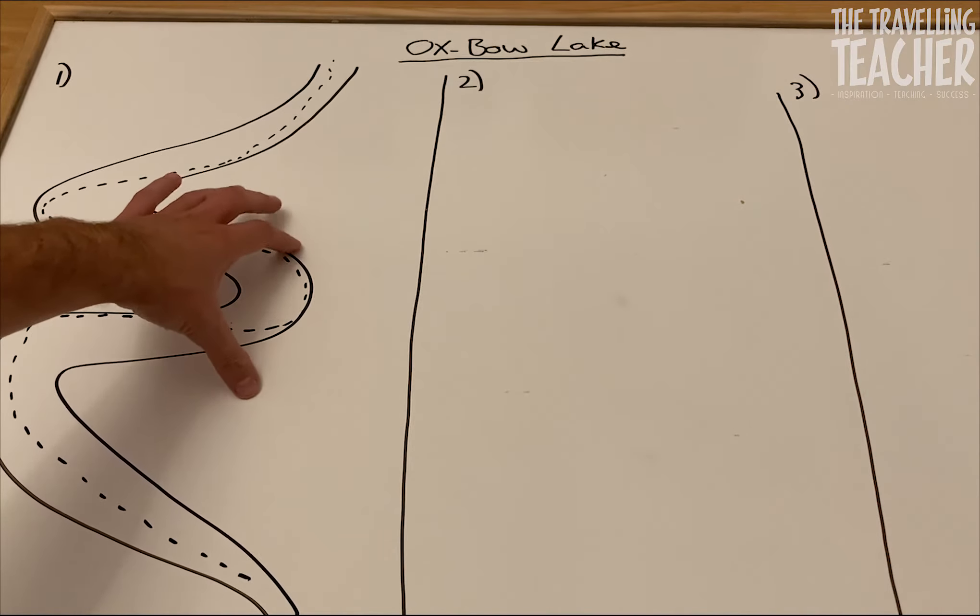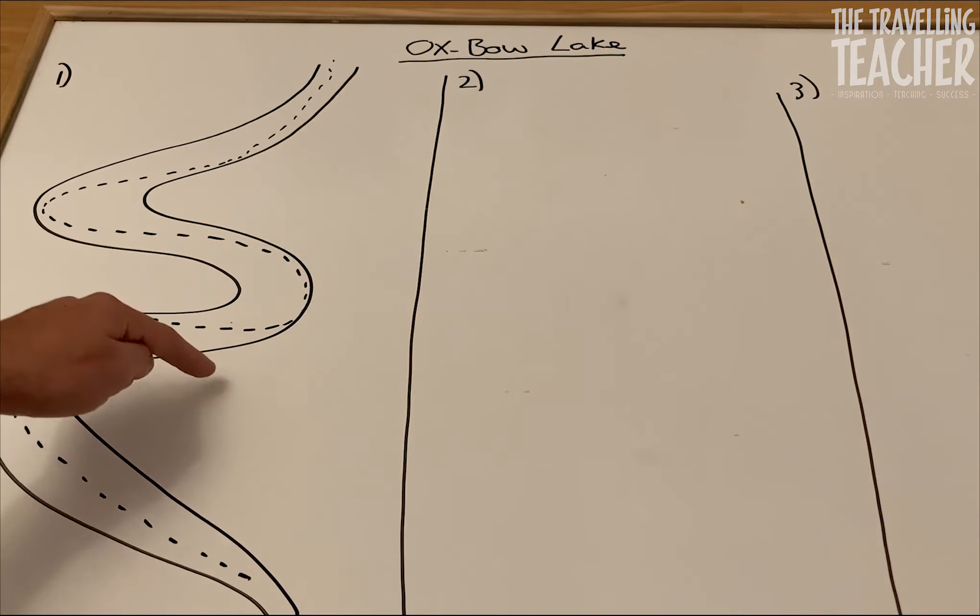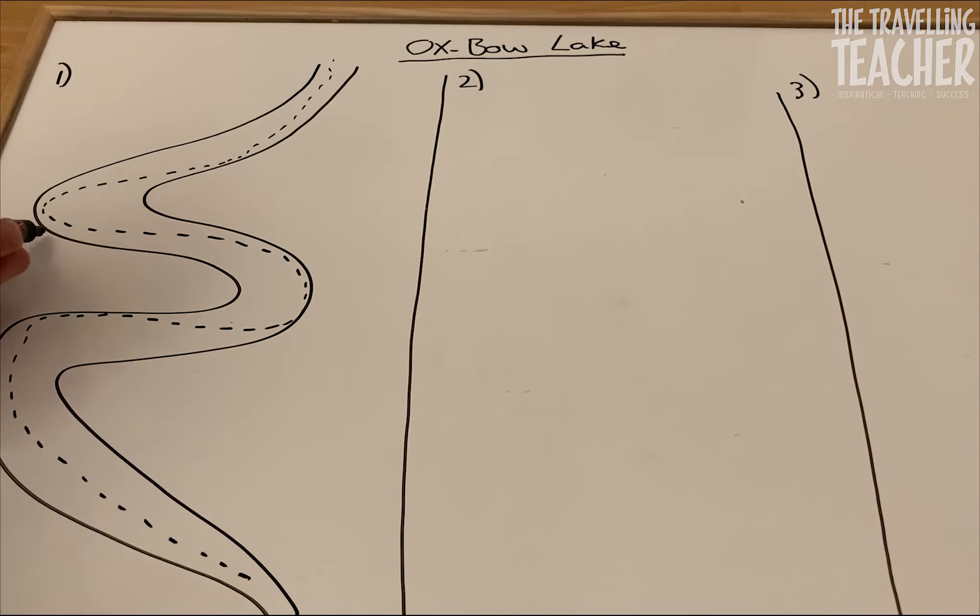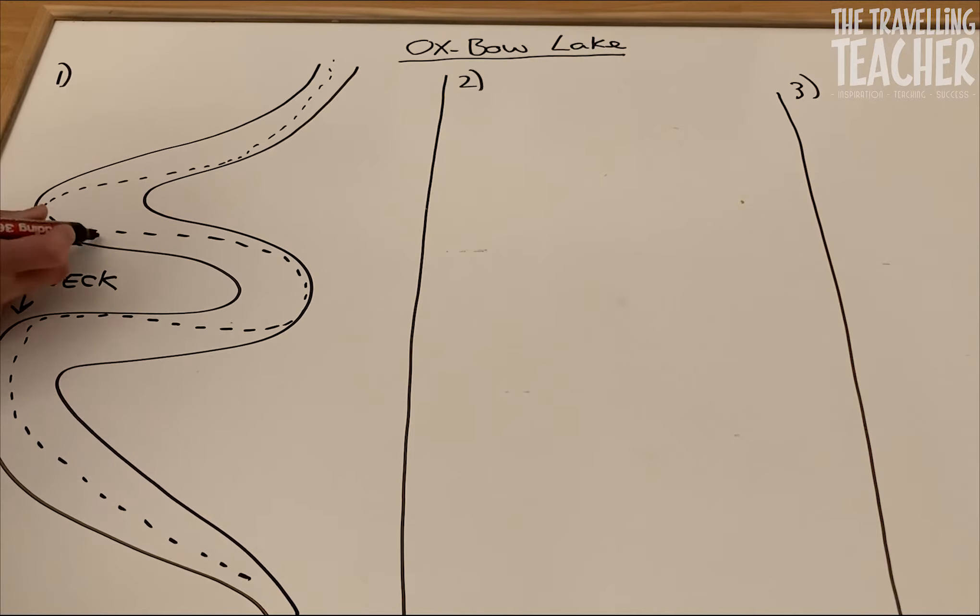Now it's this part of the river, this meander, which is going to become separated. This is going to be, eventually, our Oxbow Lake. Now, let's just focus on this part of the river valley here. This is known as the neck between these two meanders. Now, along this outside bend, along this outside bend, because the flow is greater, there's going to be a higher rate of erosion. So I'm going to put on some crosses, so you can see erosion. I'm going to write E for erosion.